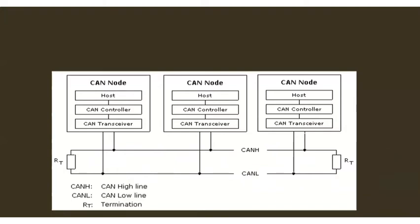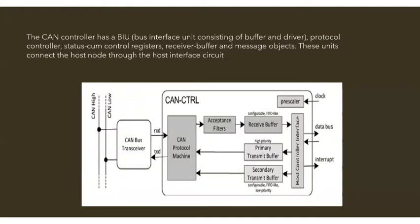Inside the CAN controller, there is a CAN protocol machine which holds the protocol, acceptance filters, a receive buffer, primary and secondary transmit buffers, and a host controller interface. The transceiver is used to send and receive data to and from the bus and passes it to the CAN controller. From the CAN controller, data is given to the host via the host controller interface. The data received from the protocol machine goes to the receive buffer and then to the host.